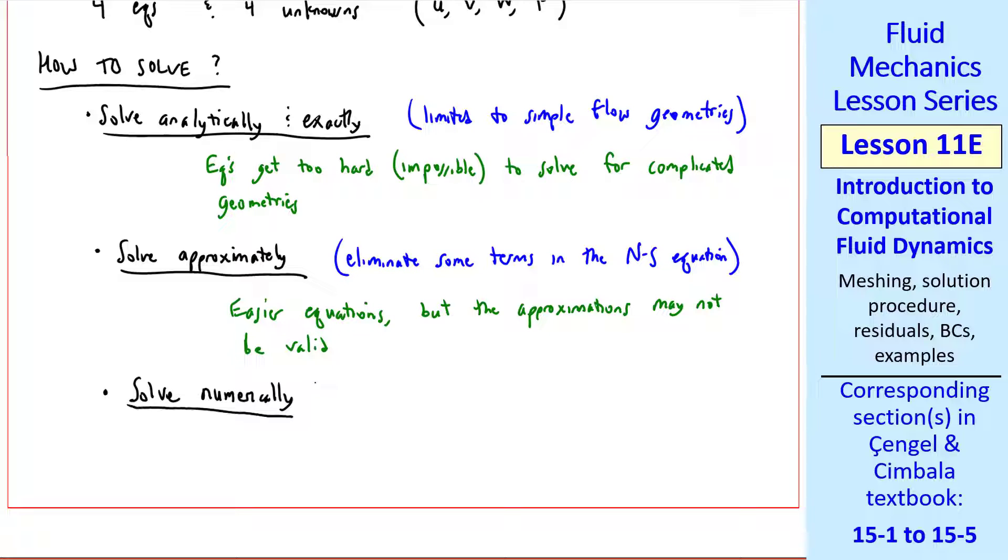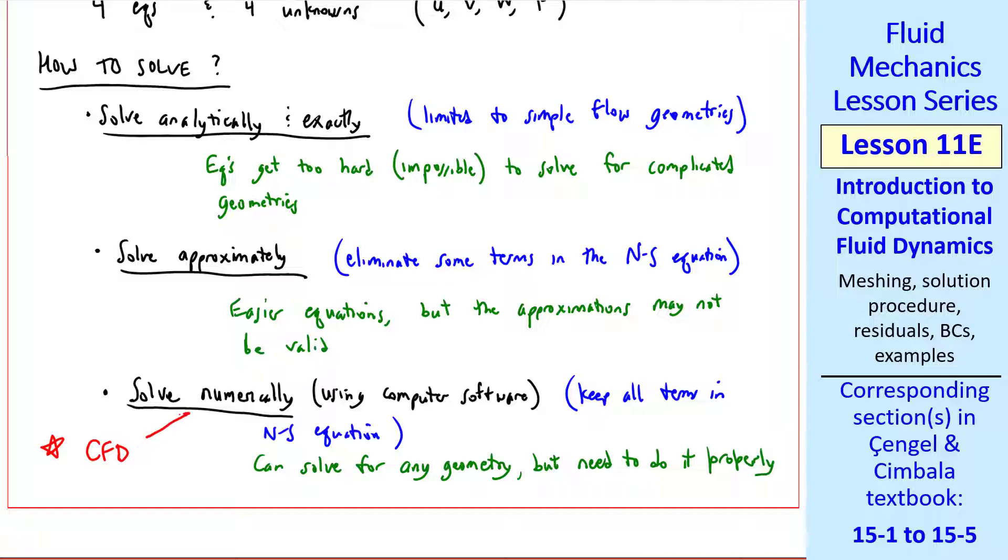The third way is to solve numerically using computer software. Here we keep all the terms in the Navier-Stokes equation. Then we can solve for any geometry, but we need to do it properly. Otherwise, we get the wrong solution. This is what we'll talk about in this lesson, Computational Fluid Dynamics, or CFD.